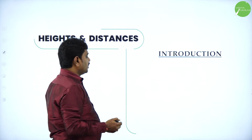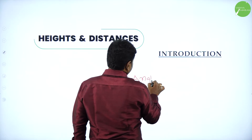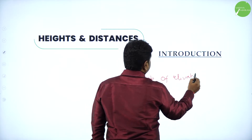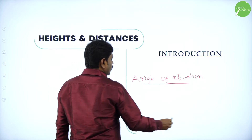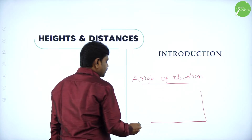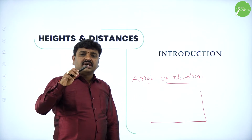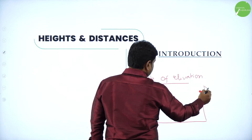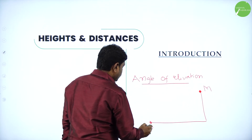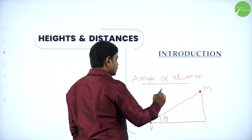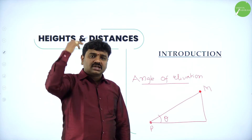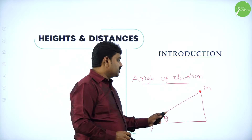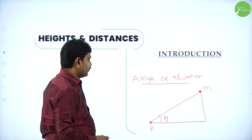Now the basic definition: angle of elevation. They will not ask you to define it, but if you do not understand angle of elevation you cannot analyze the situation. What is the angle of elevation? When you want to see an object which is at a height from you — when the object is present higher than you — suppose if I want to see the object at point M from a point P, then I have to lift my head and see. This is the angle of elevation — when you raise your head to see any object that is higher than you in height, we call that the angle of elevation.